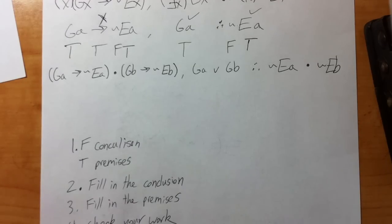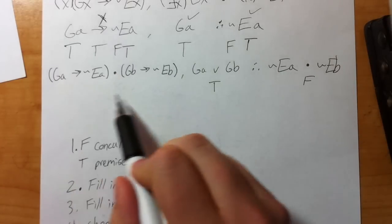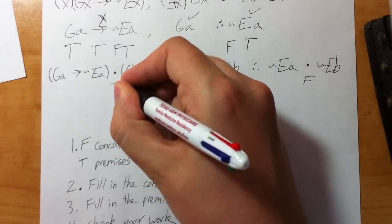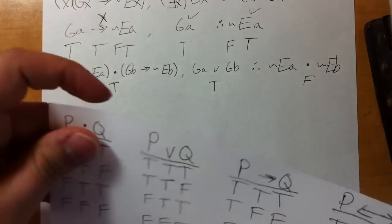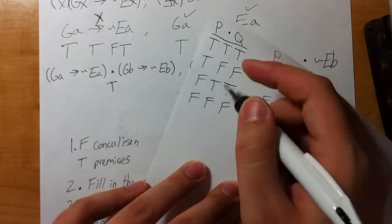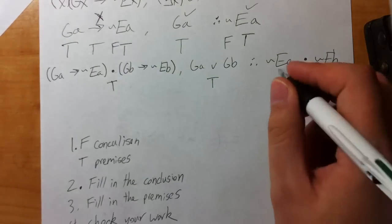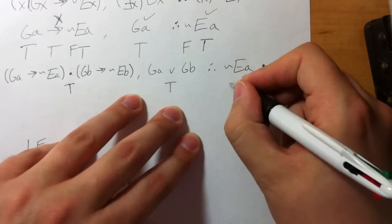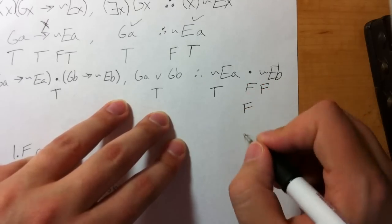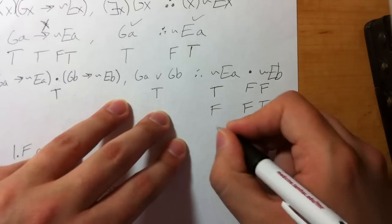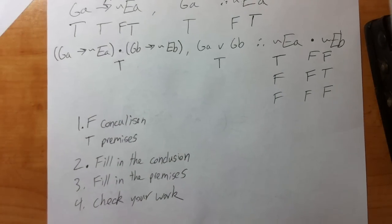Step one: make the conclusion false — the dot is the main connector, so put F underneath it. Make the premises true. Step two: fill in the conclusion. There are three ways to make a dot false, so we'll have to try each combination: true-false, false-true, or false-false. Let's try the first: tilde EA true and tilde EB false, which means EA is false and EB is true.